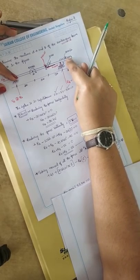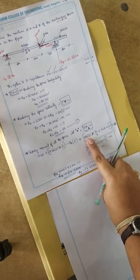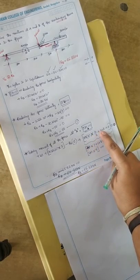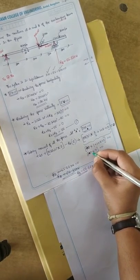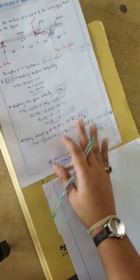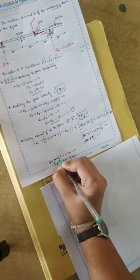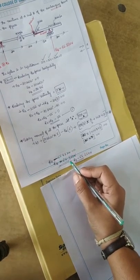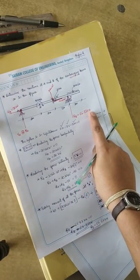For the last load, the UDL: 20 × 2 = 40 kN acts as a point load. Its centroid distance is 2/2 = 1 m from the start of the UDL, so the total distance from A is 1 + 2 + 3 = 7 m — wait, separately calculating: 40 × 7. So collecting all moment terms and setting equal to 0, we solve to get RB = 65.83 kN.